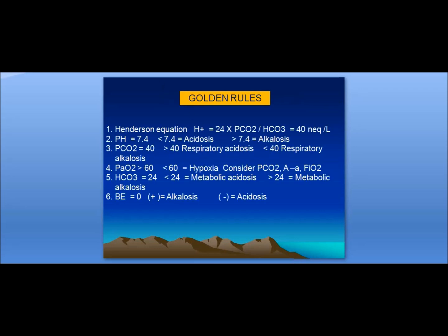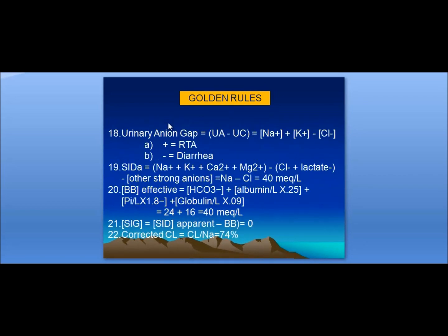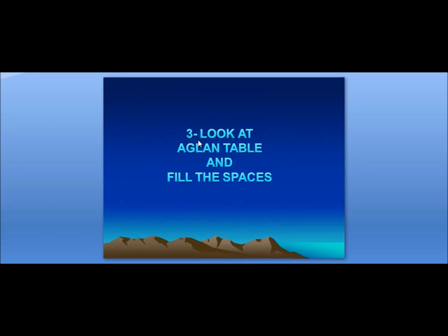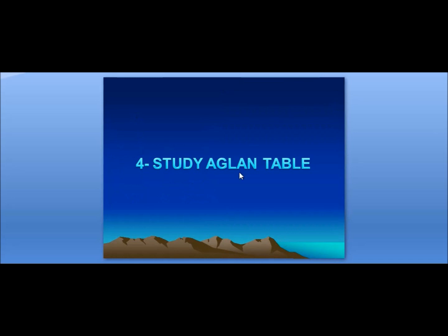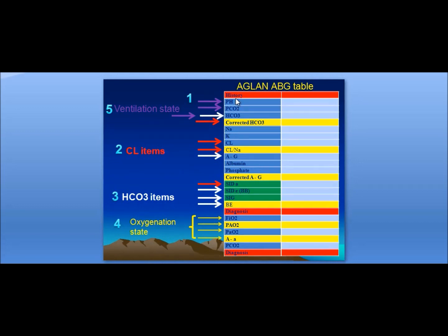For the calculations of the calculated items, don't forget these formulas and equations — I have collected them in the form of golden rules in these four slides. You should know them by heart. Number three: look at the AGLAN table and fill the spaces. These spaces are two: the measured items will be taken from the lab investigations and the ABG chart, and the calculated items — marked with red — you have to calculate before starting the AGLAN ABG table.